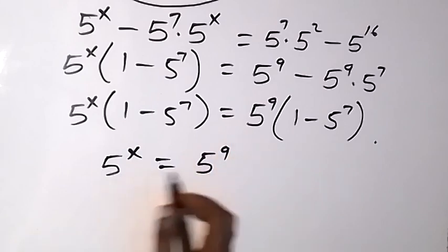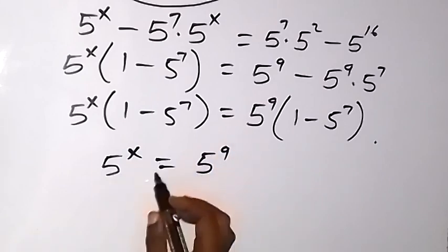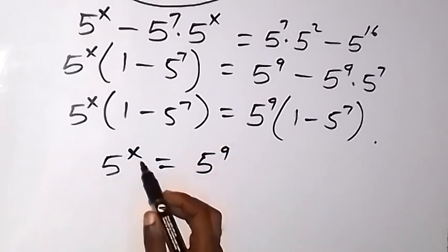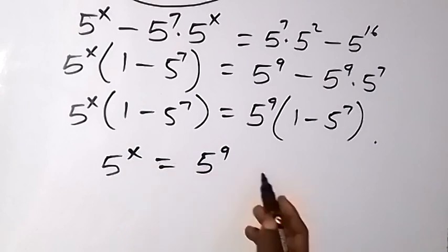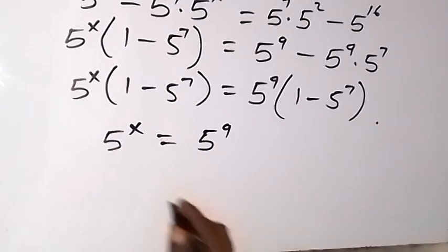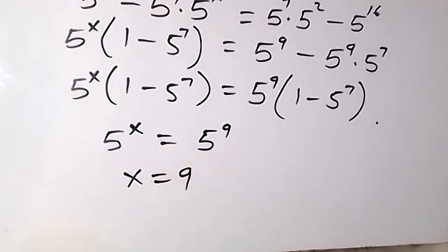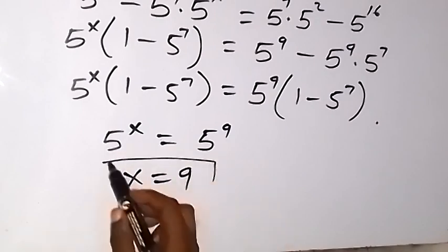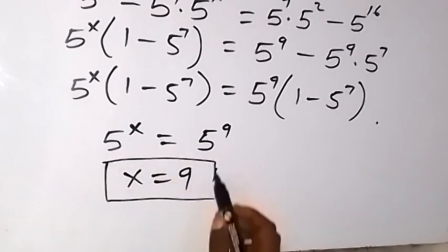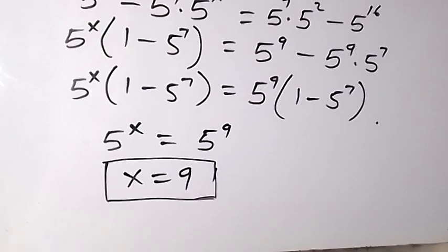Now we have the same base on both sides, so by the law of indices we equate the powers: x equals 9. Therefore x equals 9 is the solution. Thank you for watching — don't forget to subscribe for more videos, and see you in the next class.